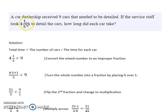In this problem, we have a total time of four and one-fifth hours and a total number of cars. If we divide the total time by the total number of cars, then we can find the time it took for each car. So the total time, four and one-fifth hours, divided by the total number of cars, nine, is what we're trying to do in this problem to solve it.